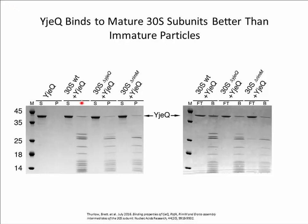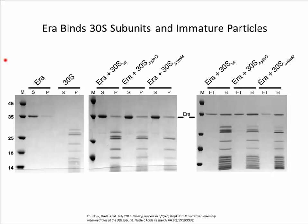Shown here are the binding assays for YJQ interacting with mature 30S subunits and immature 30S particles. For the pelleting assays, when YJQ is incubated alone it remains entirely in the supernatant. When YJQ is incubated with mature 30S subunits, it binds and remains in the pellet. When YJQ was incubated with immature ribosomal subunits isolated from the delta YJQ and delta RIMM knockout strains, there also appeared to be binding as indicated by the presence of YJQ in the pellet portion. The filtration assay showed a similar result. Based on this data, it appeared that YJQ may interact more strongly with mature 30S subunits compared to immature particles, however it was very hard to discern any difference.